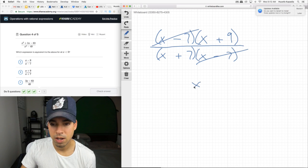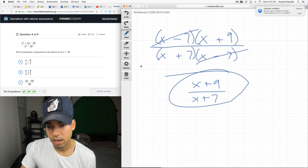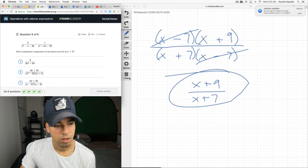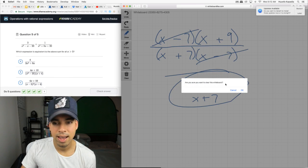What can we cross off here? Boom. Boom. And, our final answer is X plus 9 over X plus 7. Did that work? Here we go.